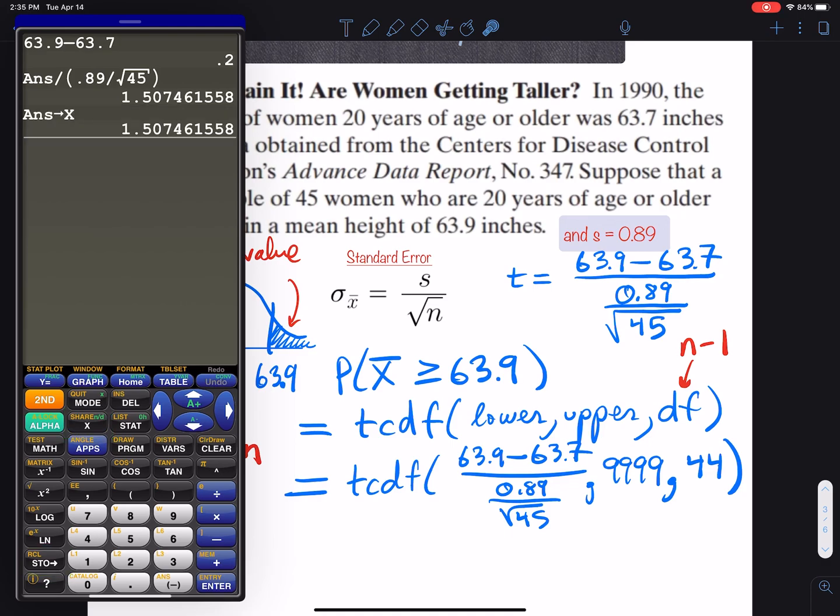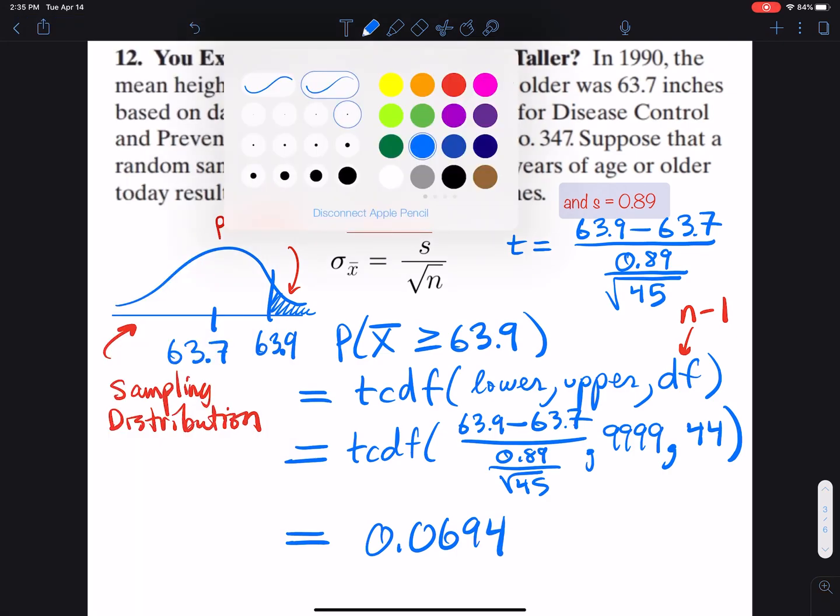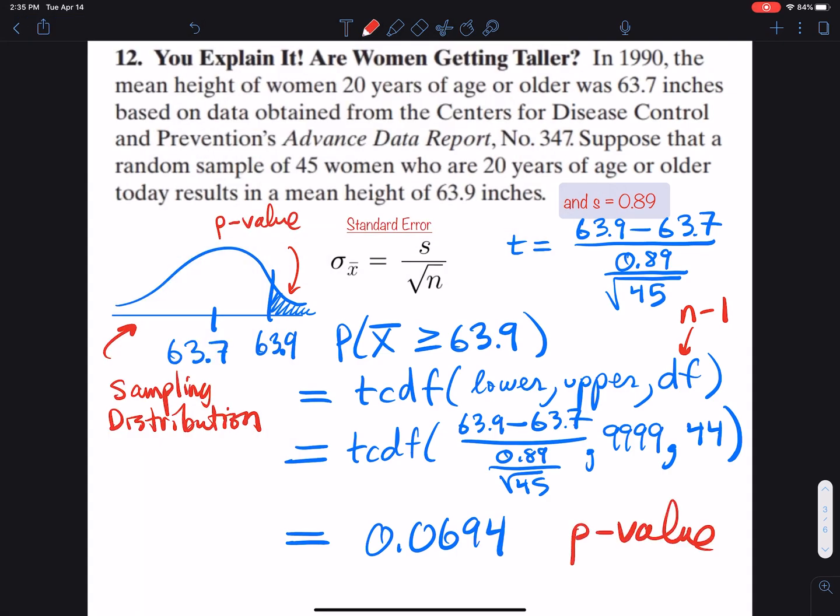Now I do second distribution TCDF, entering x, 999999, 44. I use 999999 to represent infinity. This equals 0.0694 - that's the p-value, which is what we really need. The test statistic was 1.5, but the p-value is what we use to make our conclusion. That's the hard way.